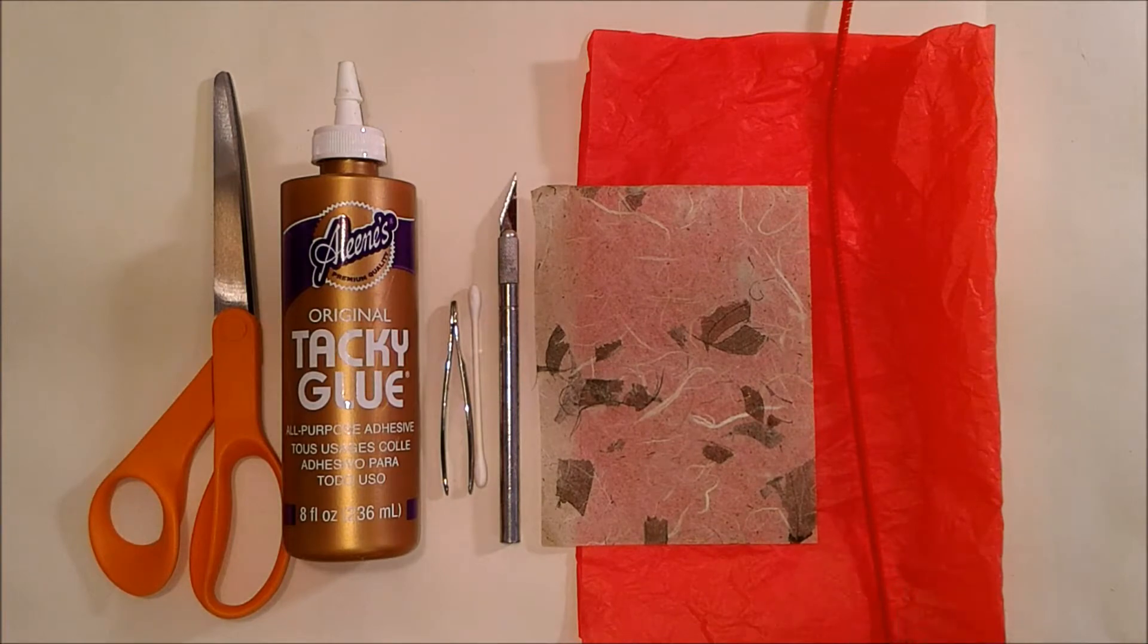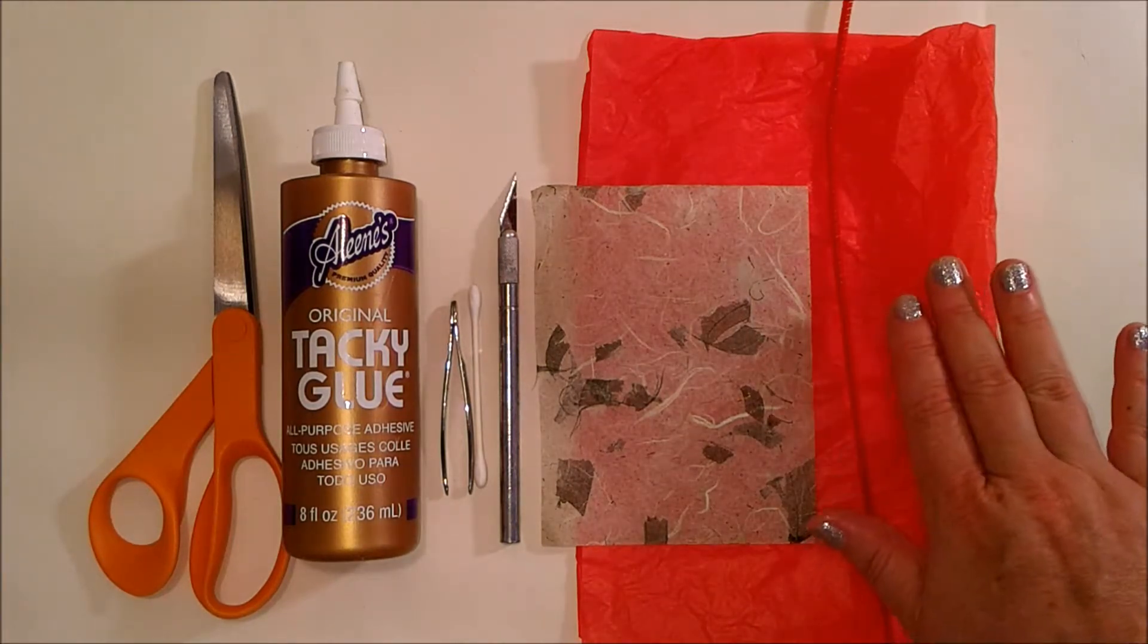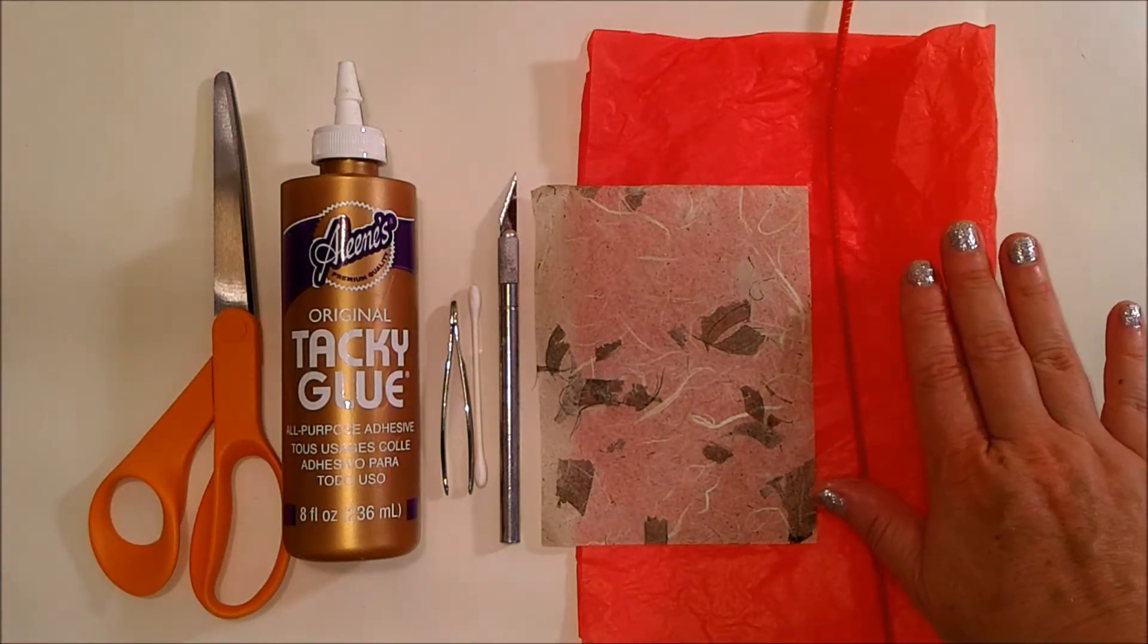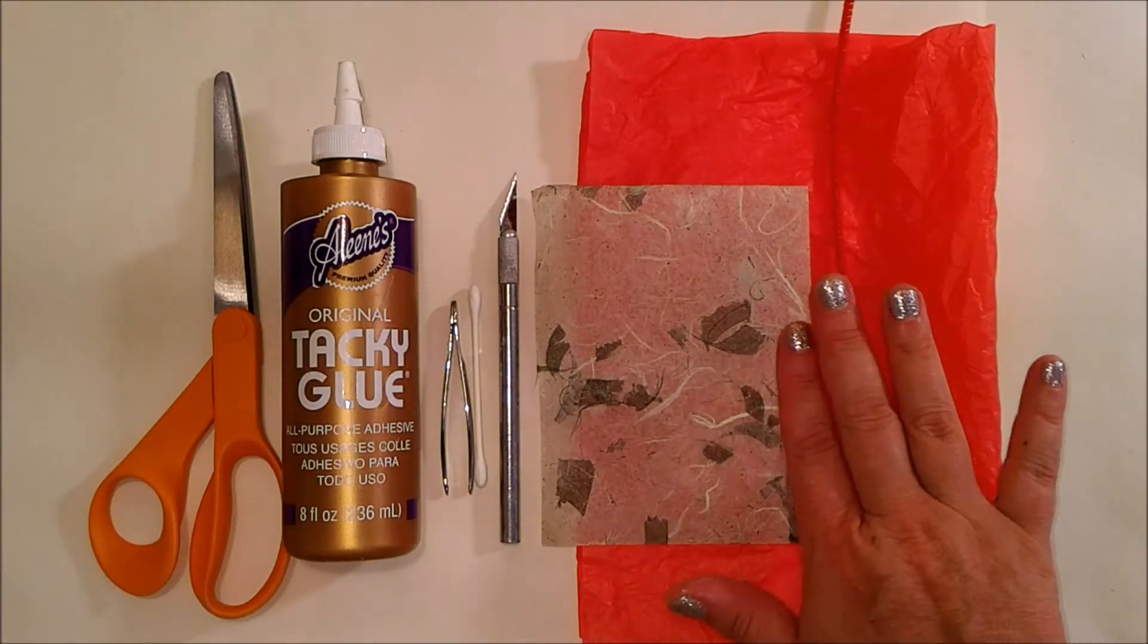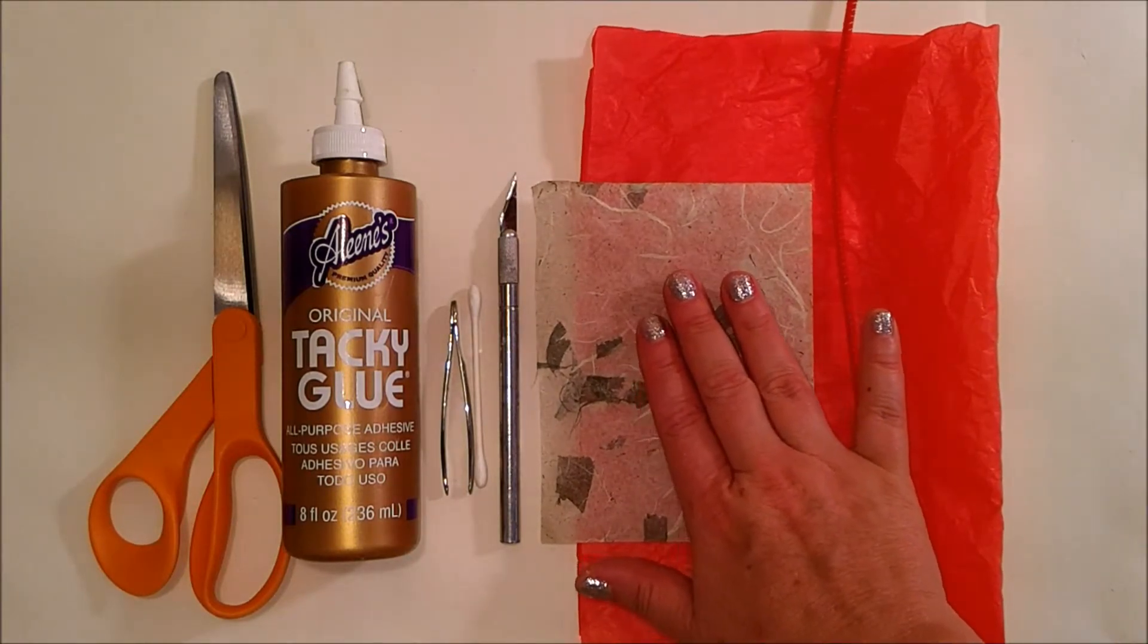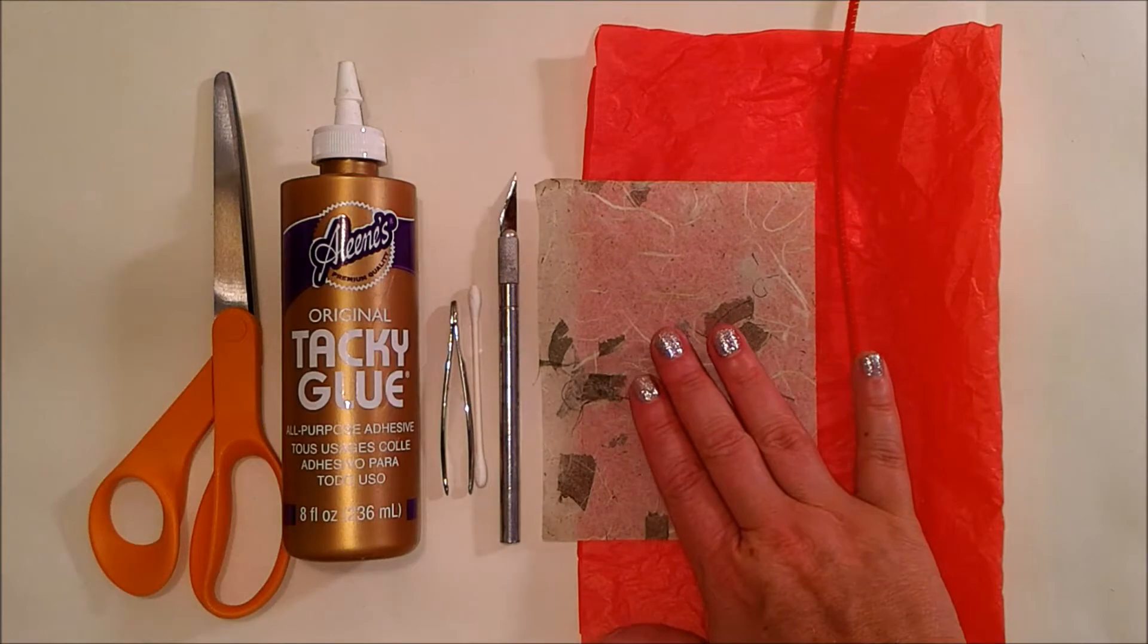These are the supplies we're going to be using. This is about an 8.5 by 11 inch sheet of tissue paper, a pipe cleaner, and paper of your choosing. This I'm going to use for the leaves, which is why it's green.